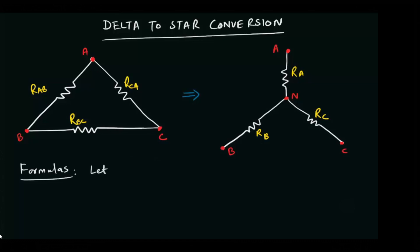In this conversion, the denominator will remain the same for all three resistances. For simplicity, let RT be equal to the denominator, which is the sum of all delta resistances.